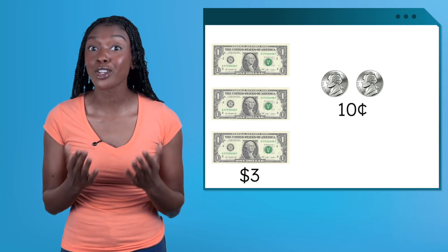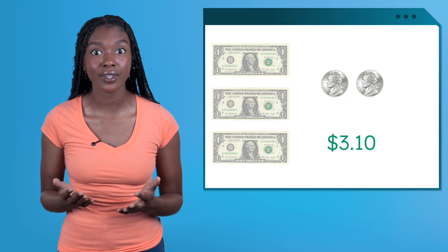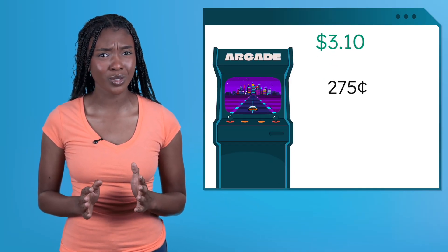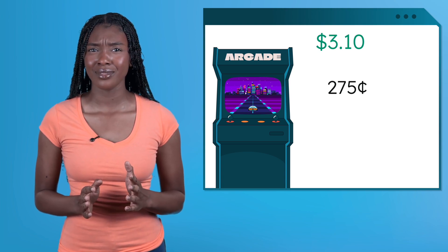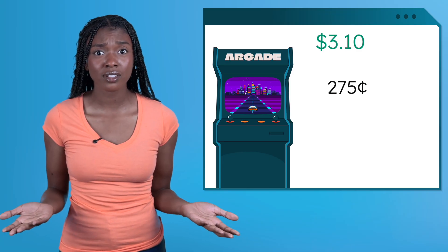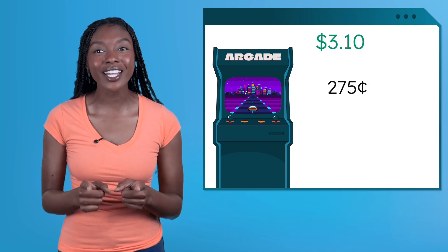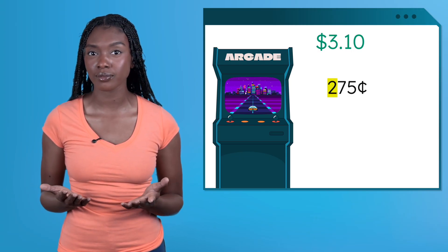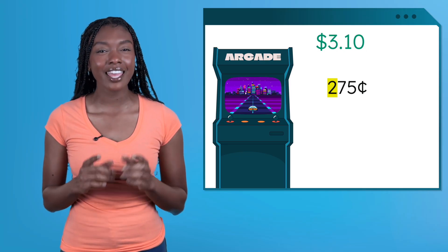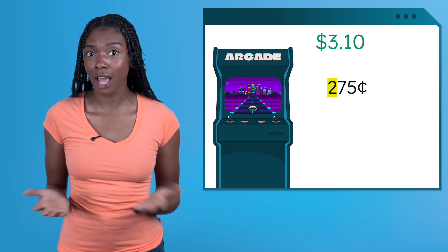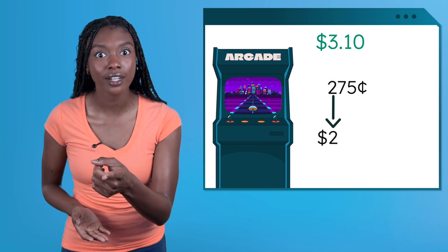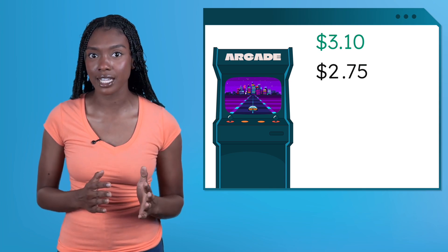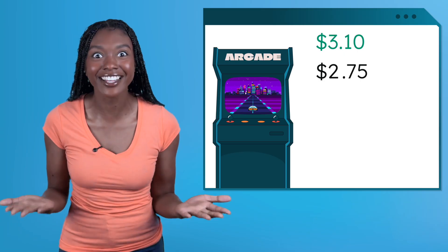Now let's compare this amount to the price of the race car rally game, which costs 275 cents. This number is only in cents. What can we do to solve? You got it, we need to figure out what that means in dollars and cents. How many hundreds are in this number? 200. If each dollar is worth 100 cents, how many dollars do we have? Two. Then we have 75 cents left over. Two dollars and 75 cents. Do we have enough money? Yes, we have more than two dollars and 75 cents. We can play race car rally.